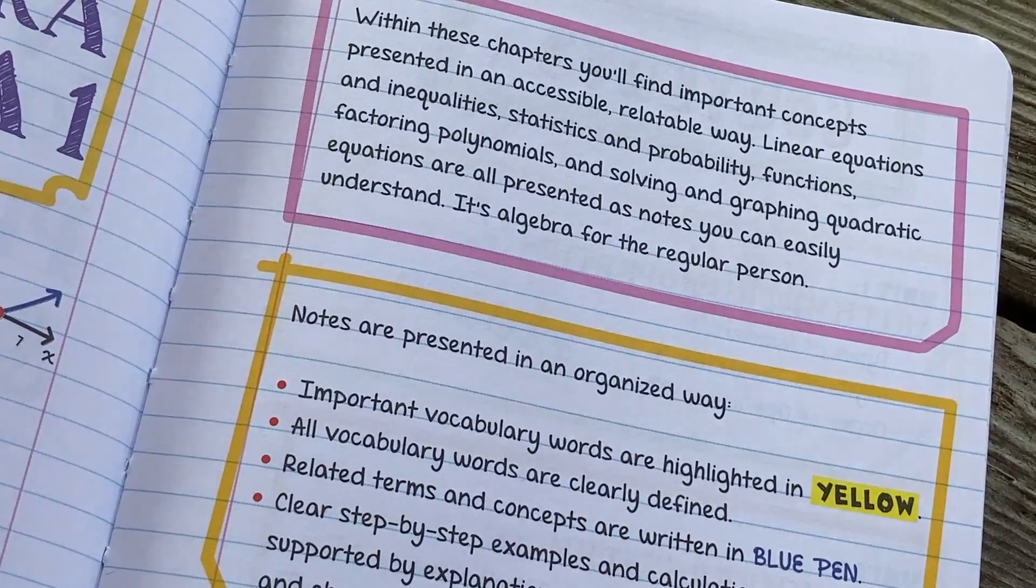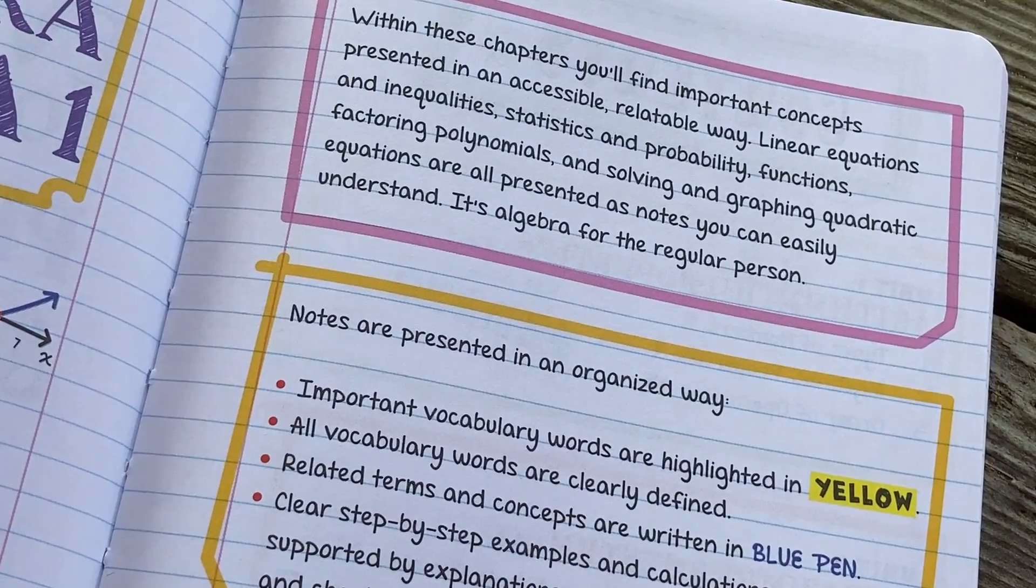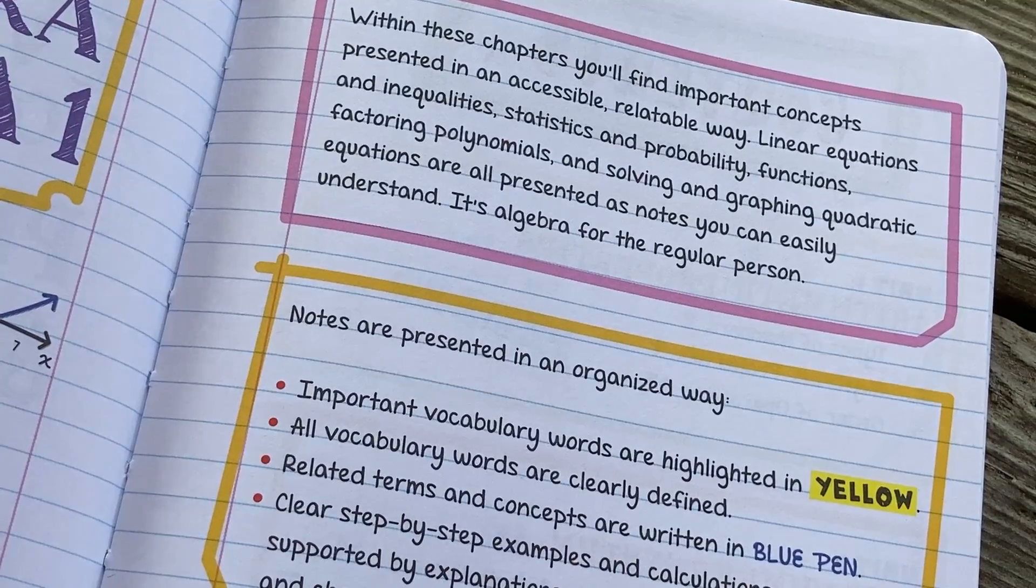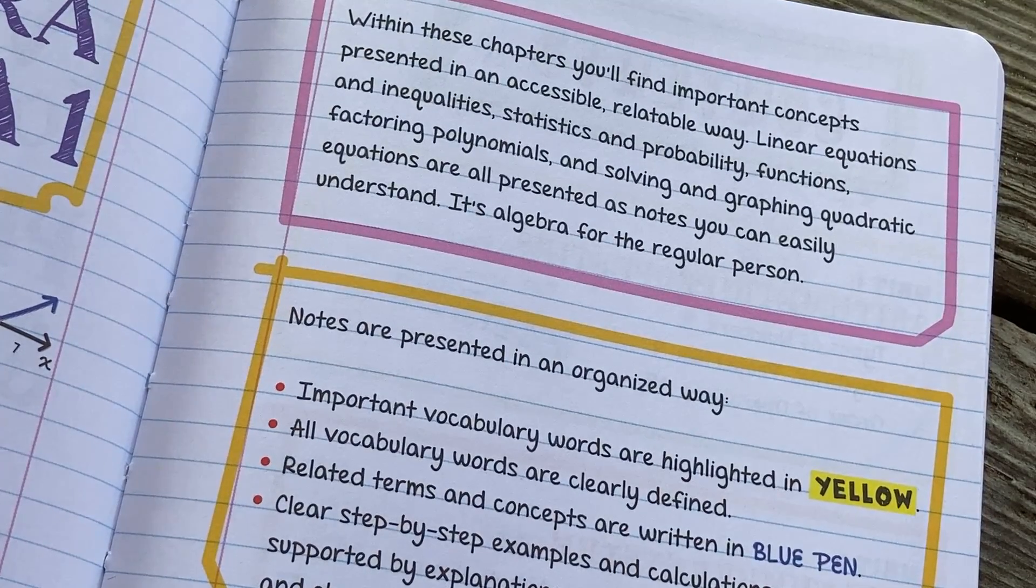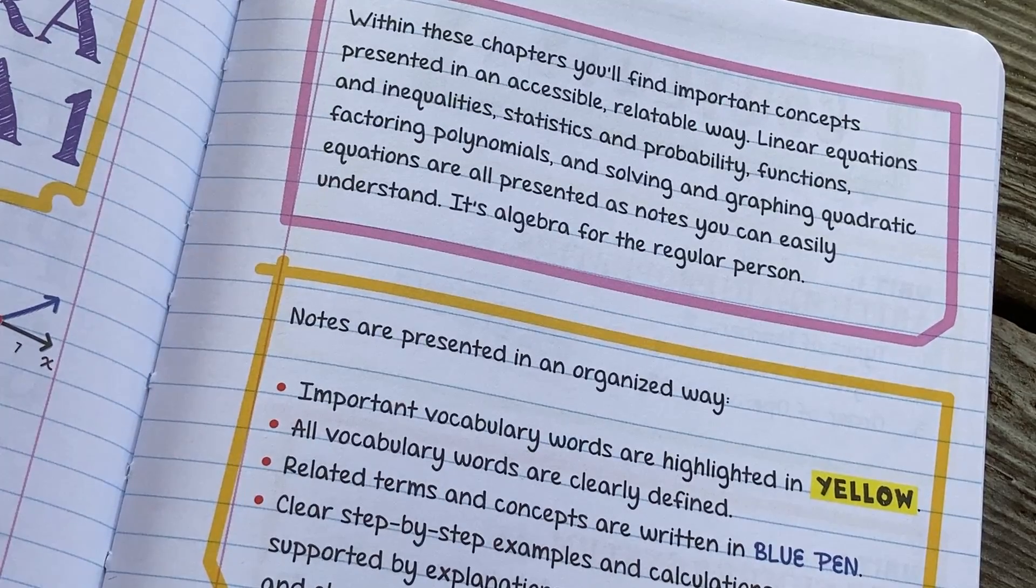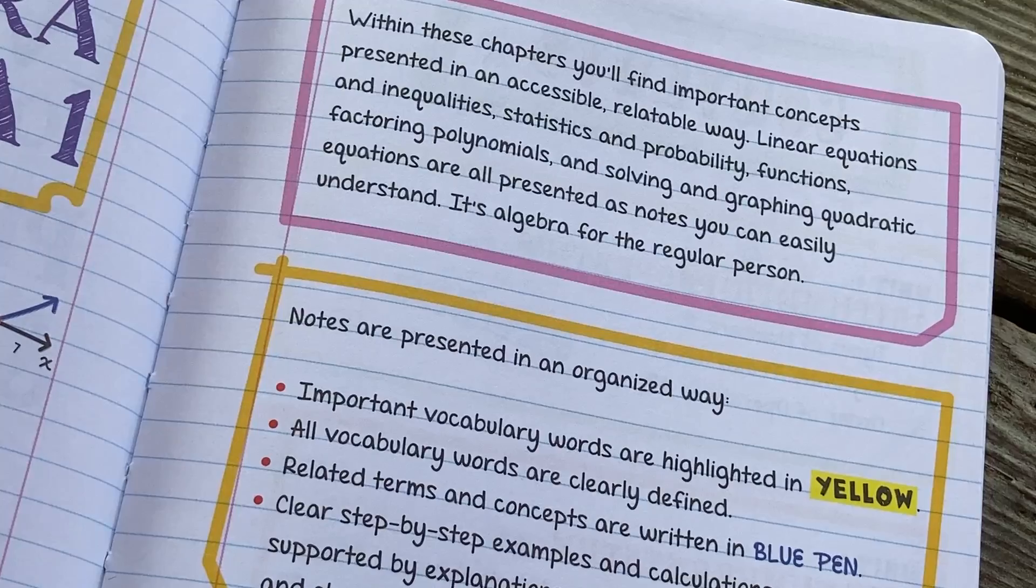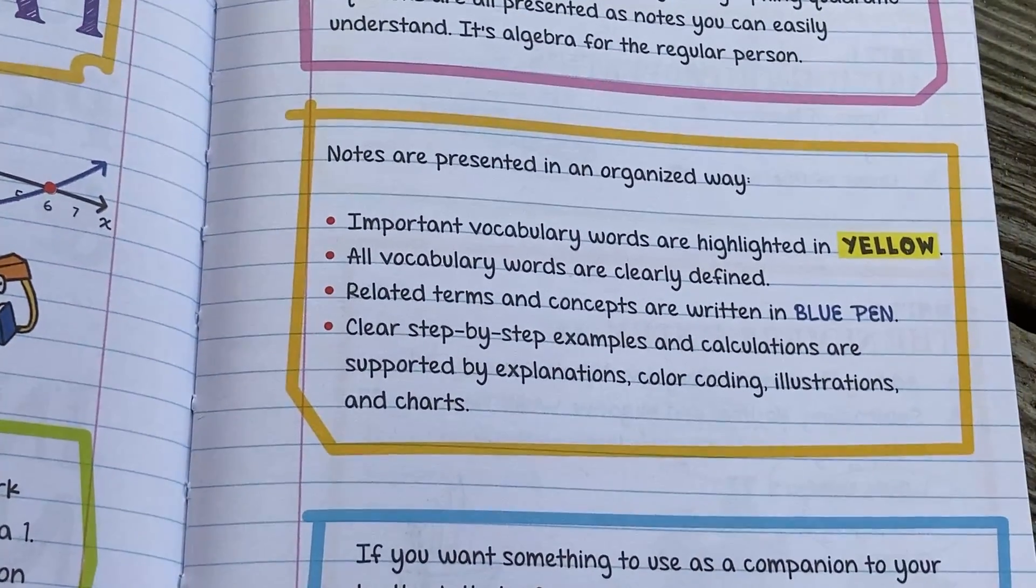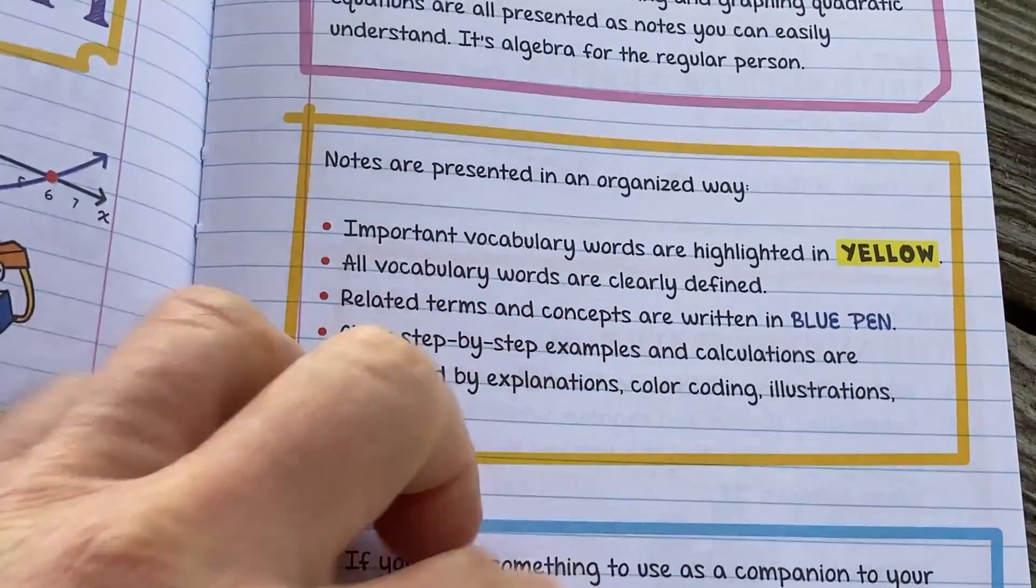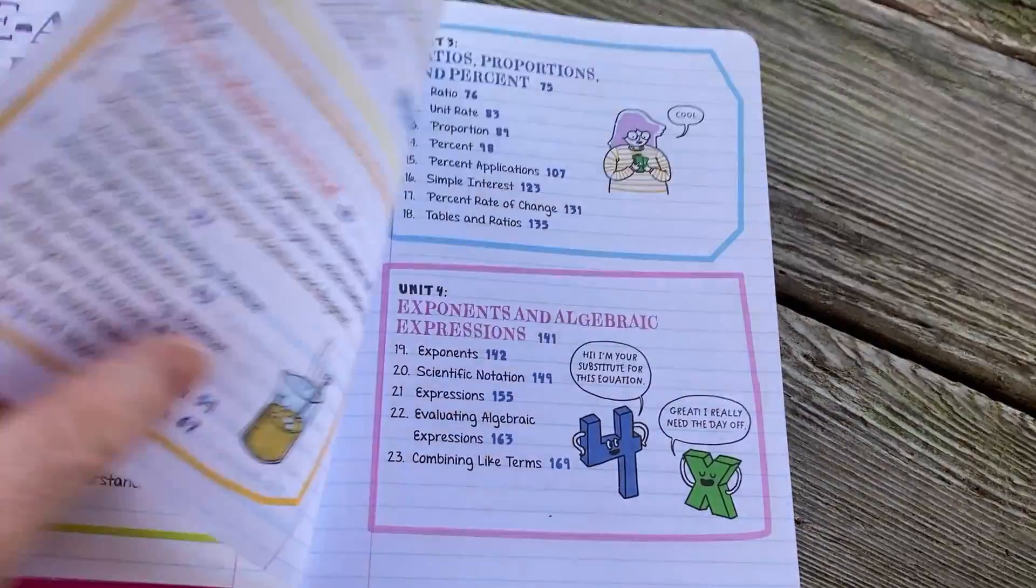And then here it talks a little bit more about it. It says within these chapters you'll find important concepts presented in an accessible, relatable way. Equations and inequalities, statistics and probability, functions, factoring polynomials, and solving and graphing quadratic equations are all presented as notes you can easily understand. It's algebra for the regular person. Notes are presented in an organized way. It says important vocabulary words are highlighted in yellow. Let's just jump into it so you can see the actual design.